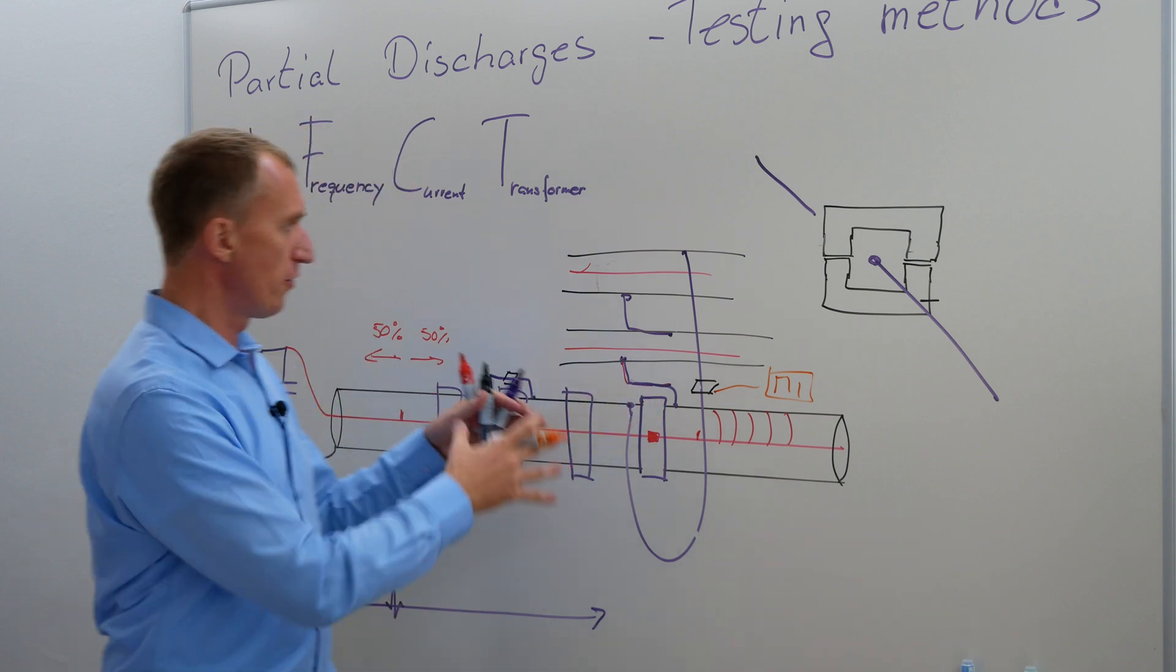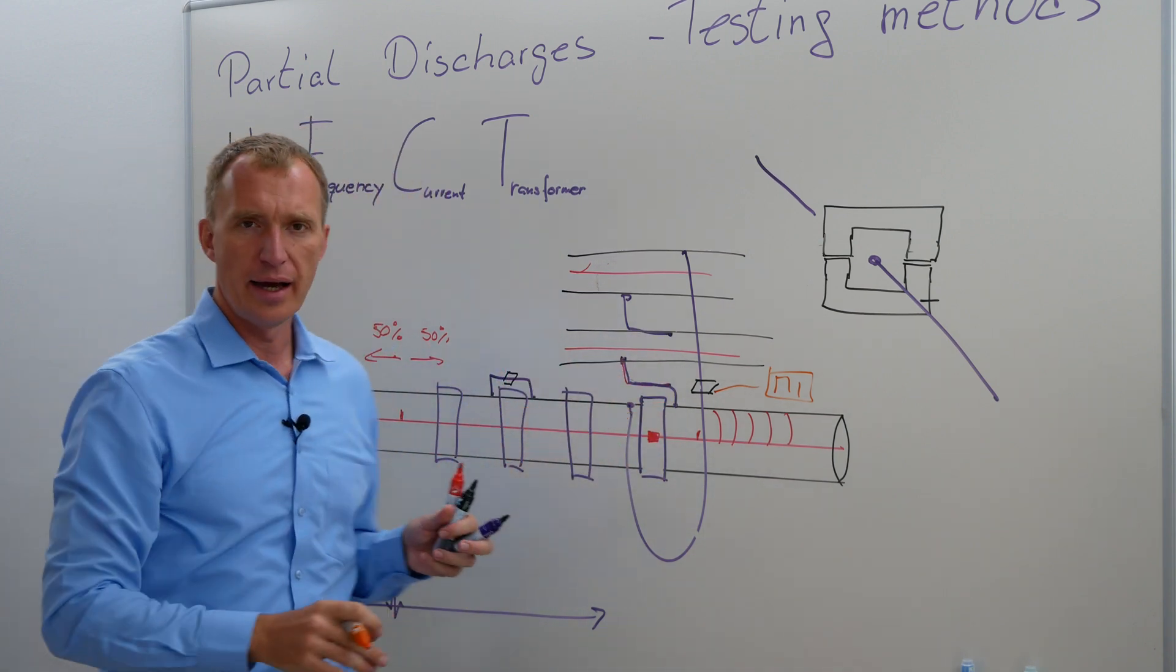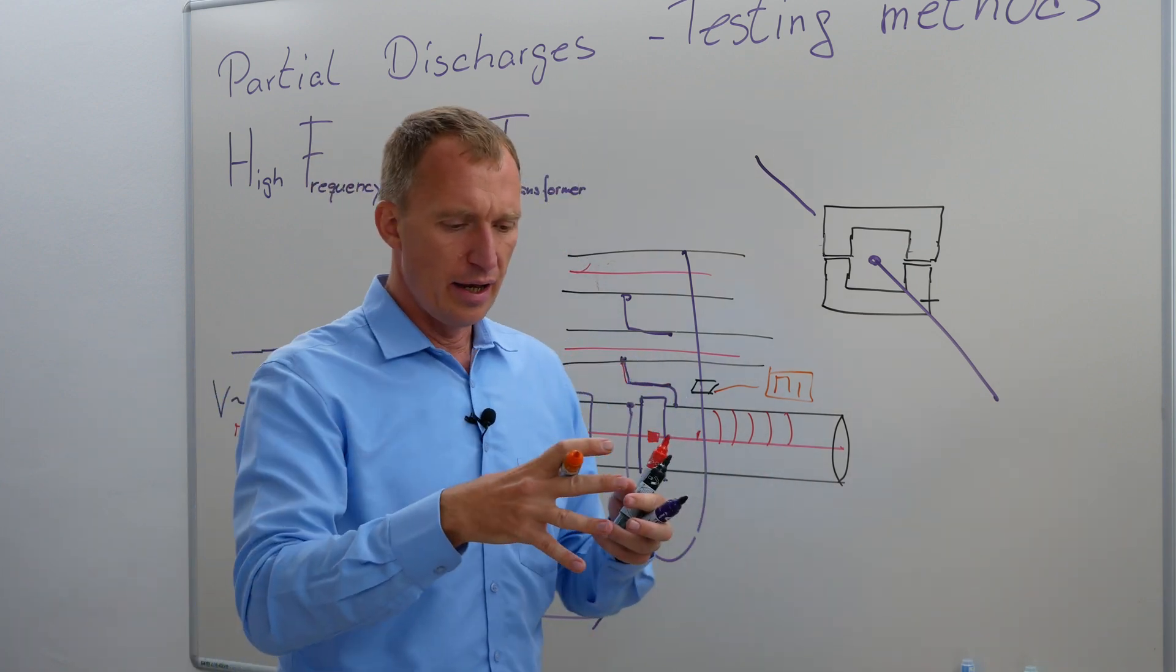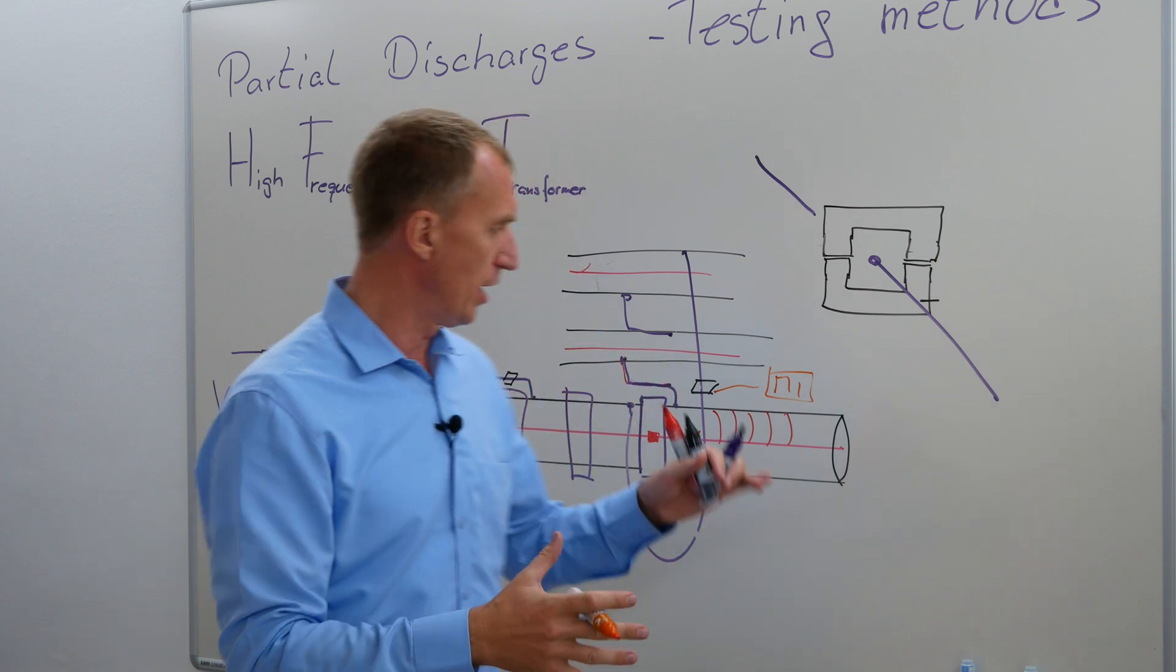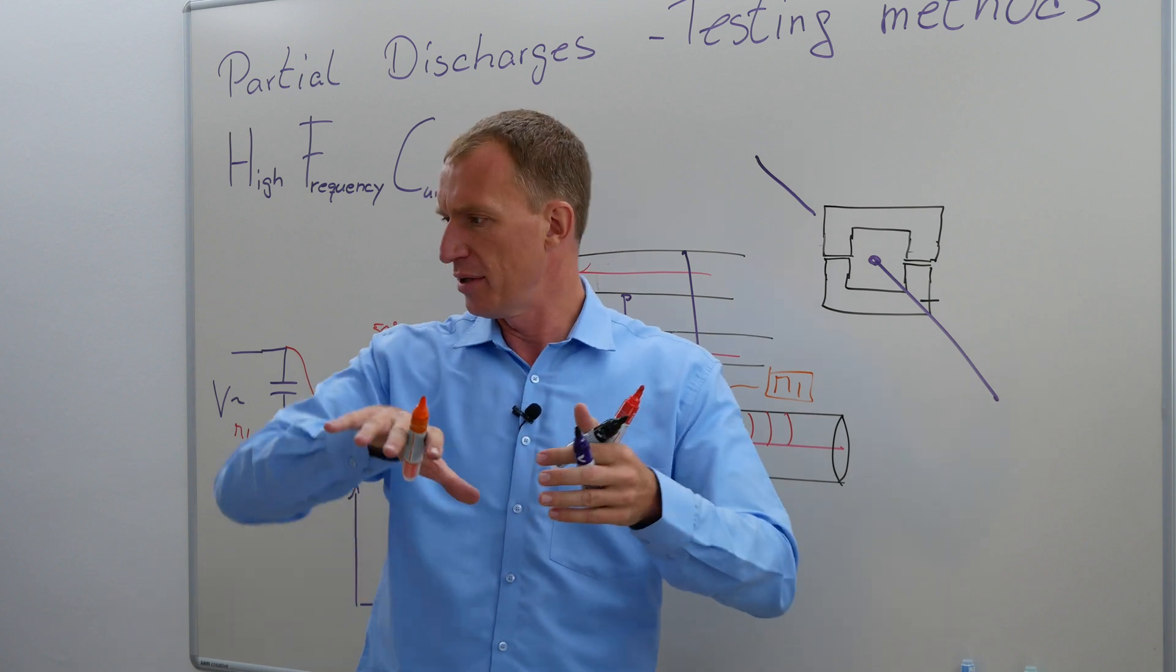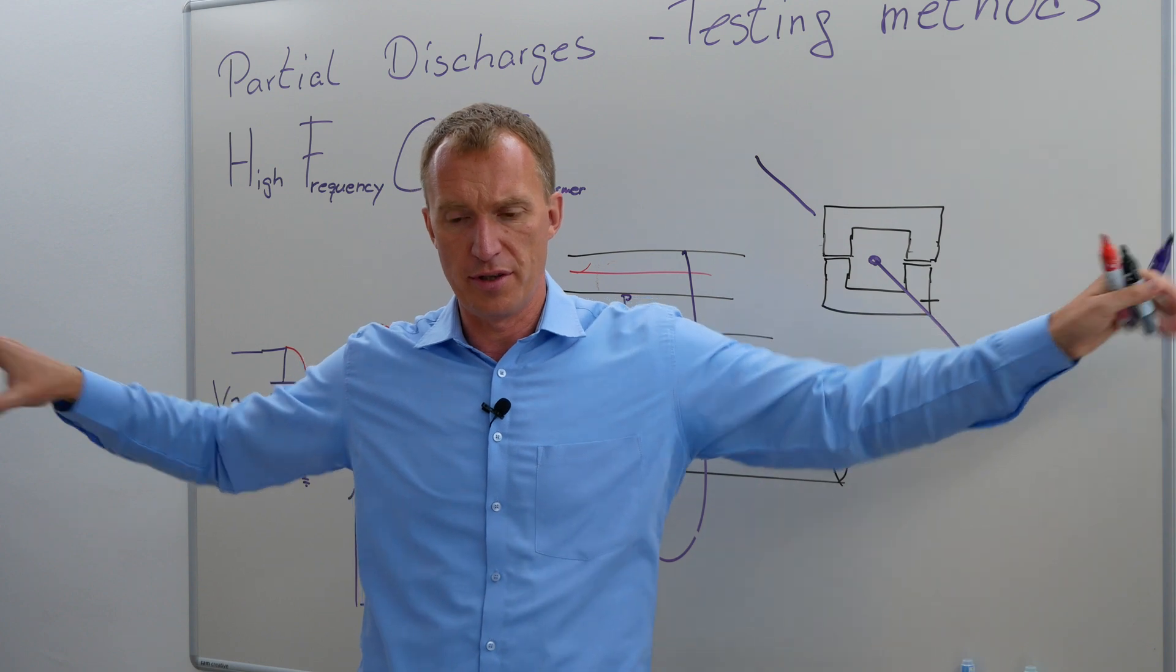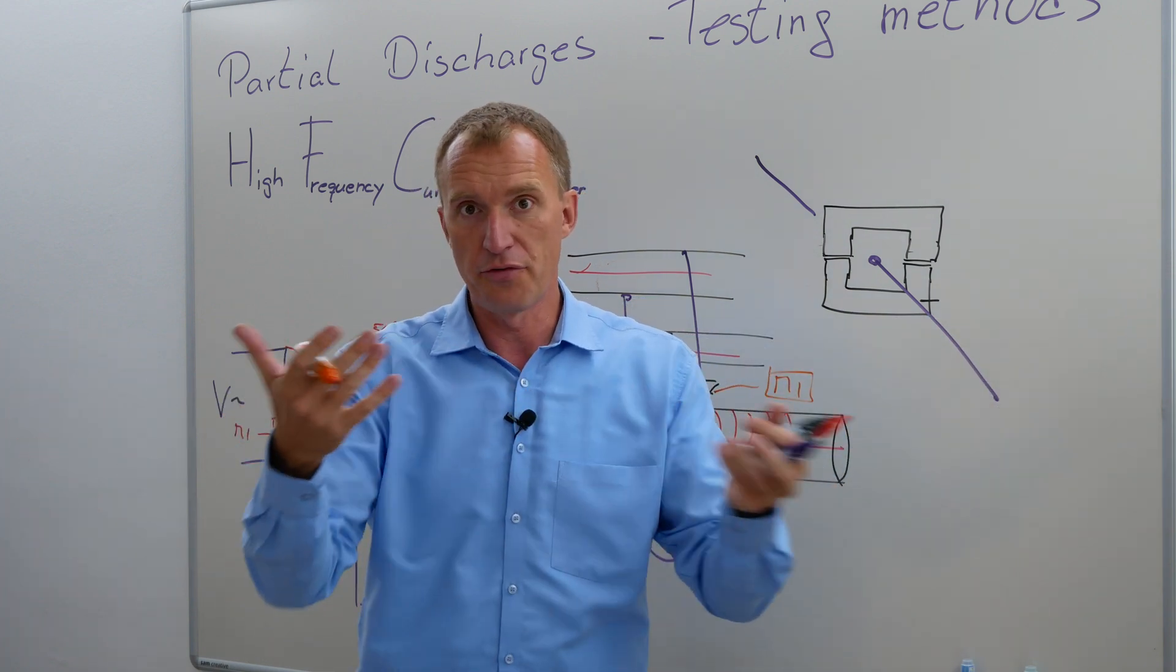You're able to measure on a very long cable, 20 kilometers. You can measure more or less localized. And now you can play around a little bit of the frequency in order to figure out how far can I see. So I'll give an example. If you're measuring the low frequency and you're having one of these HFCTs here, it is not uncommon that you can measure one kilometer or two kilometers on this side and two kilometers on this side. Meaning, you see multiple joints.